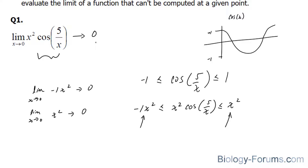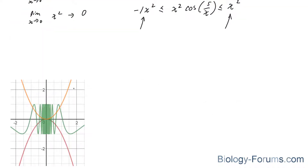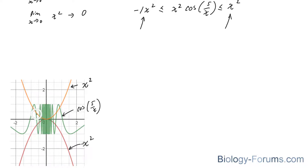Here is a graphical representation of what we just did. I graphed x squared and negative x squared, and I also graphed the function x squared times cosine 5 over x. As this wave gets closer and closer to x equals 0, it becomes undefined.